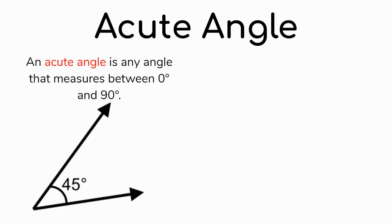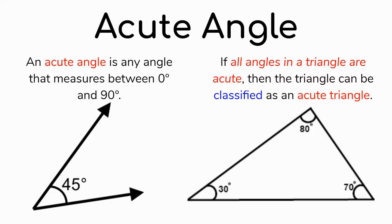Now that we've talked about sides, it's time to talk about angles. The first angle we're going to discuss is called an acute angle — any angle that measures between 0 degrees and 90 degrees. For example, a 45-degree angle is between 0 and 90, so that's an acute angle. If all of the angles in a triangle are acute, then we classify that triangle as an acute triangle. For example, a triangle with angles of 30, 70, and 80 degrees — all less than 90 — is an acute triangle.